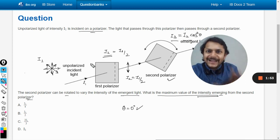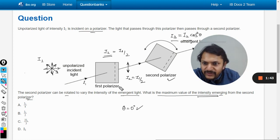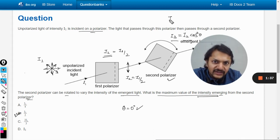The maximum intensity possible will be I₁ by 2. So I₃ is going to equal I₂, and I₂ equals I₁ divided by 2, as has been shown here.